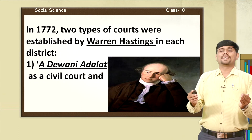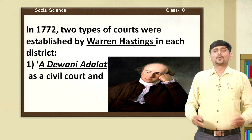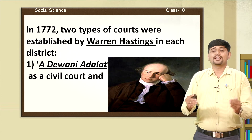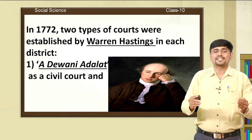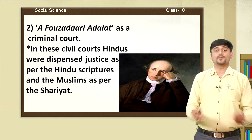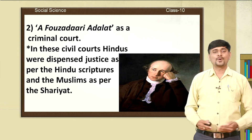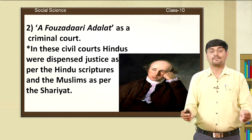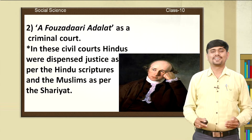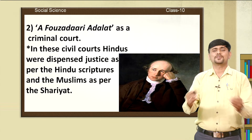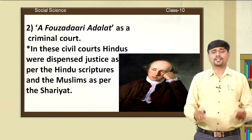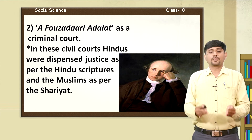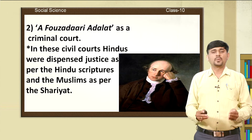In the year 1772, two types of courts were established by Warren Hastings in each district. One court is called a Diwani Adalat, which is also called a civil court. The other is a Faustdari Adalat, serving as a criminal court. In these civil courts, the Hindus were dispensed justice as per the Hindu scriptures — such as the Mahabharata, karma theory, Upanishads, and Bhagavad Gita. Capital punishments were dispensed to the Hindus accordingly, while for Muslims, punishments were given as per the Shariat law of Islam.